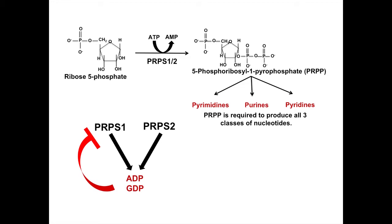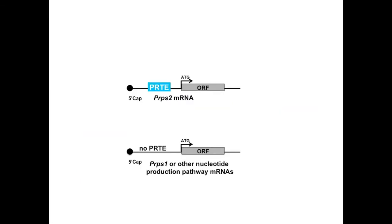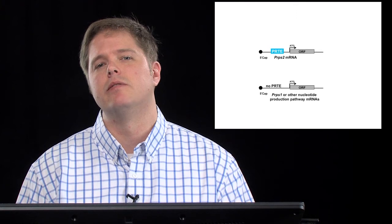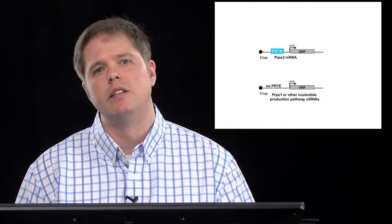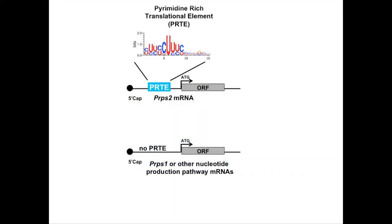PRPS2 is an enzyme that catalyzes a specific enzymatic reaction. It comes in two flavors: PRPS1 and PRPS2. The distinguishing feature is that PRPS1 is acutely sensitive to feedback inhibition by downstream nucleotide production metabolites. Because modulation of PRPS2 levels was sufficient to control the production of nucleotides, we reasoned that PRPS2 may be the fundamental link connecting the two cellular processes of protein synthesis and nucleotide metabolism. We therefore searched for the mechanistic basis for this link, and found within the 5' UTR of PRPS2 a specific translational control element we termed the PRTE, which distinguishes it from other members of the nucleotide biosynthesis pathway.